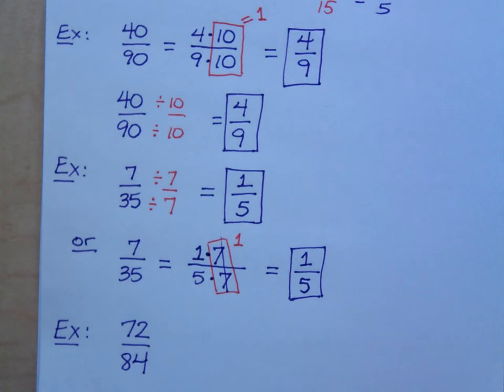When you see a fraction, your first question should be, is this guy in lowest terms? Is there something that goes into 72 and 84? And you know what? It doesn't have to be the greatest common factor.